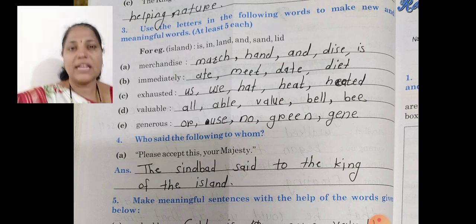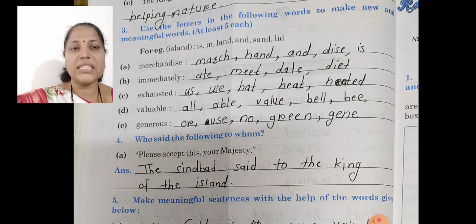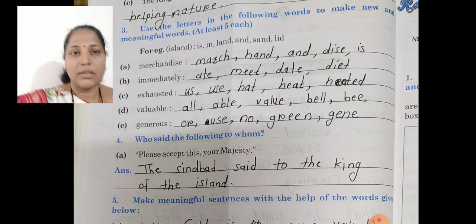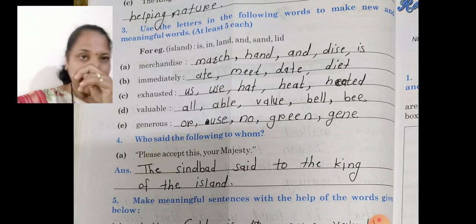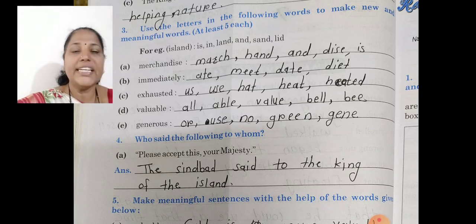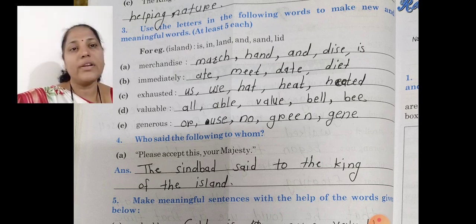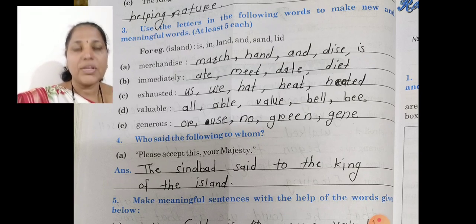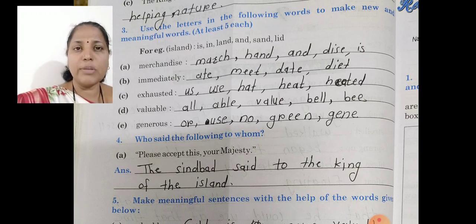Then start with 'immediately.' The spelling is 'immediately.' From this we make the spellings: ate, meet, date, diet, made. You also write other spellings — 'eat' bhi hota hai, eat ka past tense 'ate' hota hai, jo yahan pe maine already mention kiya hua hai. We also write other spellings — okay guys, at possible maximum spellings we make it and you write in your notebook properly.